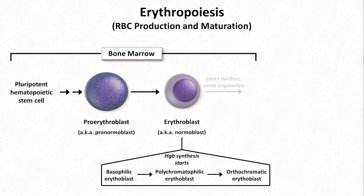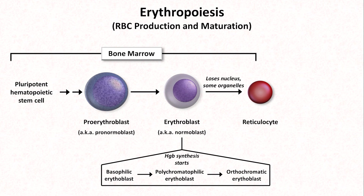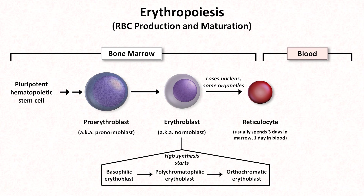Eventually, the erythroblast will lose its nucleus and some organelles, forming a reticulocyte, which looks kind of like a mature red cell, but is slightly larger and slightly bluer. Reticulocytes initially retain ribosomes, meaning that they are still capable of limited protein synthesis, such as synthesizing some more of the cell's hemoglobin. In normal circumstances, a reticulocyte — more commonly known as a retic — spends about three days in the marrow before entering the systemic circulation, where they will take about one more day to fully mature, losing their remaining organelles and becoming an erythrocyte.